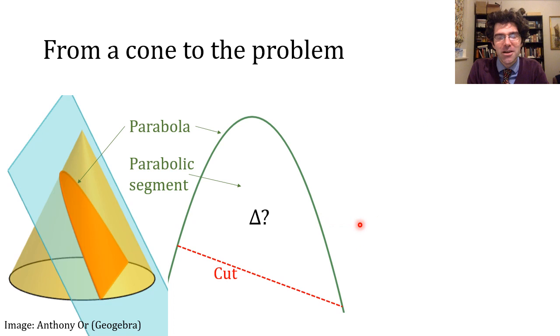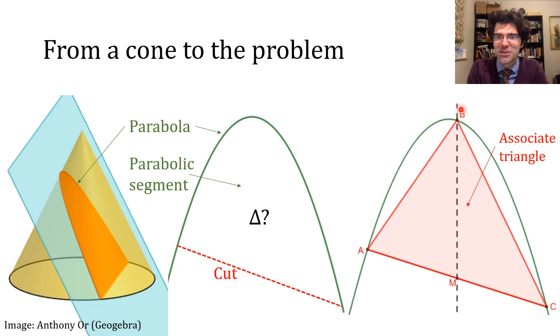Archimedes' answer is it's always proportional to a triangle that we can construct within this parabolic segment. We take the two ends of the cut as two corners, go to their midpoint, and then proceed in parallel to the axis of symmetry of the parabola. Every parabola has an axis of symmetry; in this talk we're just going to always draw our parabolas so their axis of symmetry is vertical.